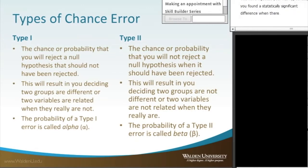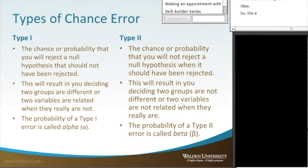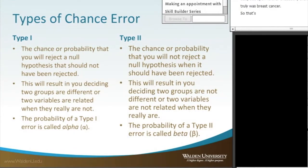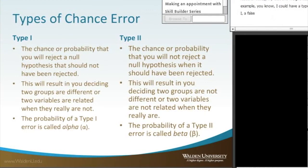The Type 2 error, or false negative, is the chance or probability that you will not reject the null hypothesis when it should have been rejected. In the mammogram example, nothing was found — it was a normal test — but upon further evaluation, there truly was breast cancer. This can also apply to a group in a research study, like a diet and weight loss example. With a Type 2 error, you conclude the two groups are not different when they truly are.